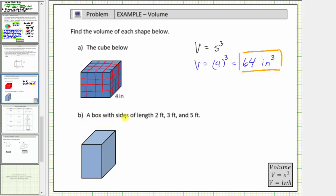For b, we're asked to find the volume of the box with sides of length two feet, three feet, and five feet. So using this box, this length is two feet, this length is three feet, and this length is five feet.